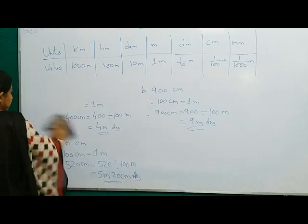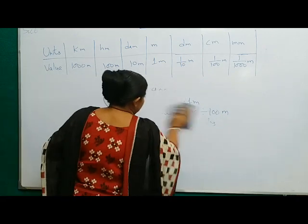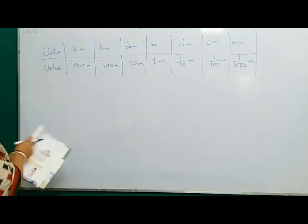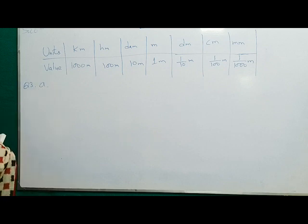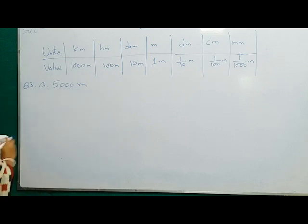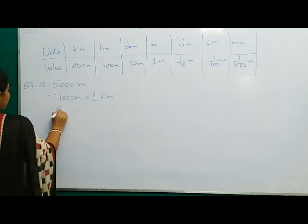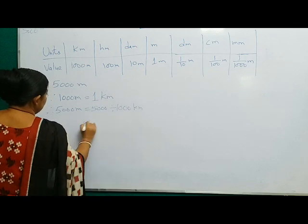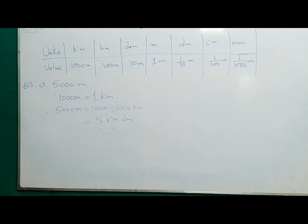You will change into kilometers. Whatever we are leaving, you try at home. This is question number 3: express each of the following in kilometers. I am writing the first one — first one is given 5000 meters. Since 1000 meters is equal to 1 kilometer, therefore 5000 meters is equal to 5000 divided by 1000, that is 5 kilometers. This is the answer for number A — to convert from meters to kilometers.